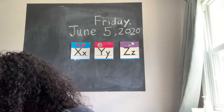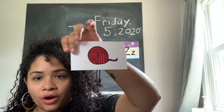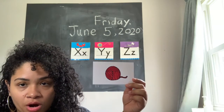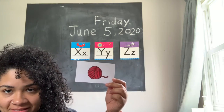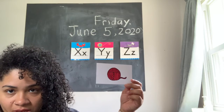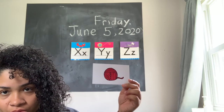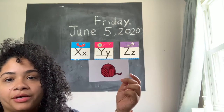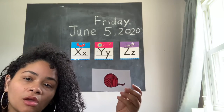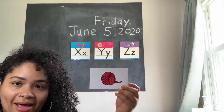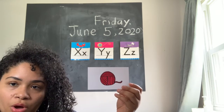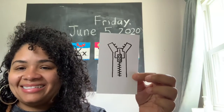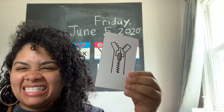Let's start with yarn. Does yarn begin with the letter X, like the way fox ends with X? Does it begin with the letter Y, like yo-yo? Yarn — I think it begins with the letter Y, like yo-yo. So I'm going to go ahead and put it under the letter Y.